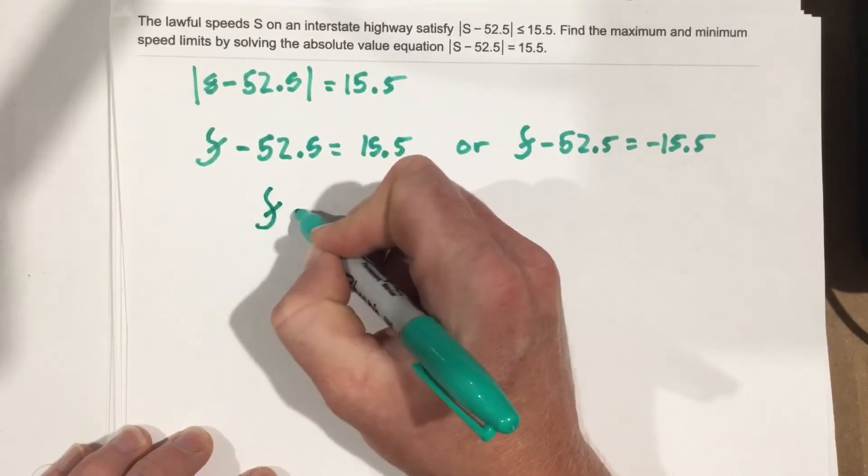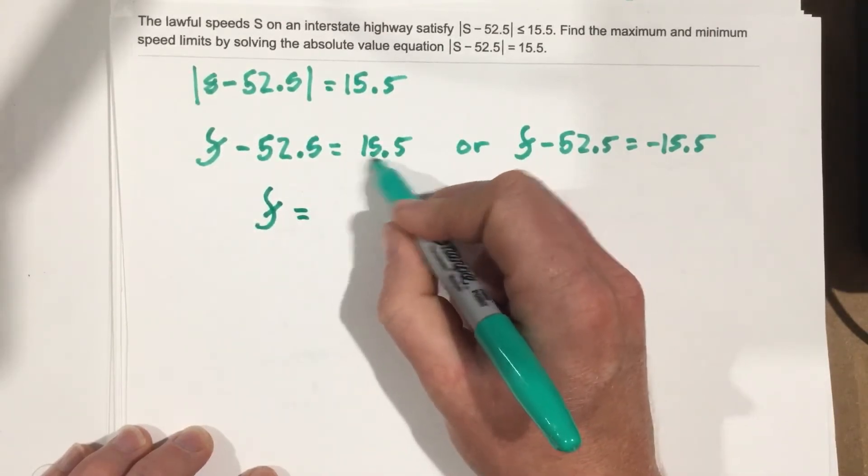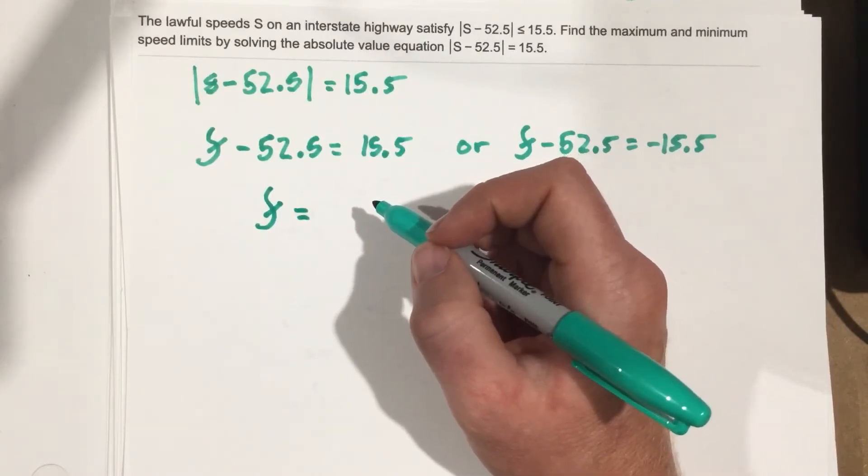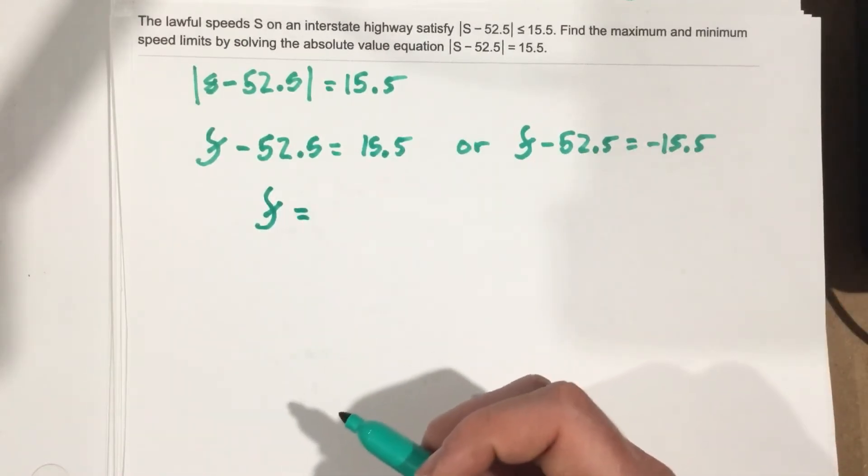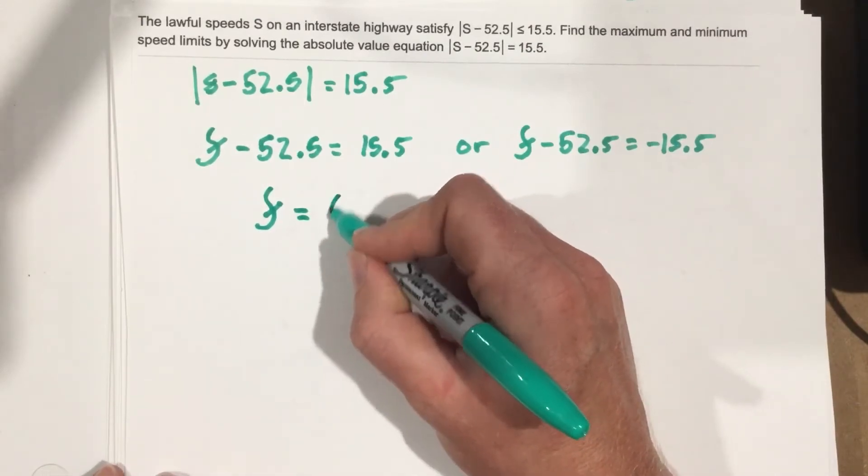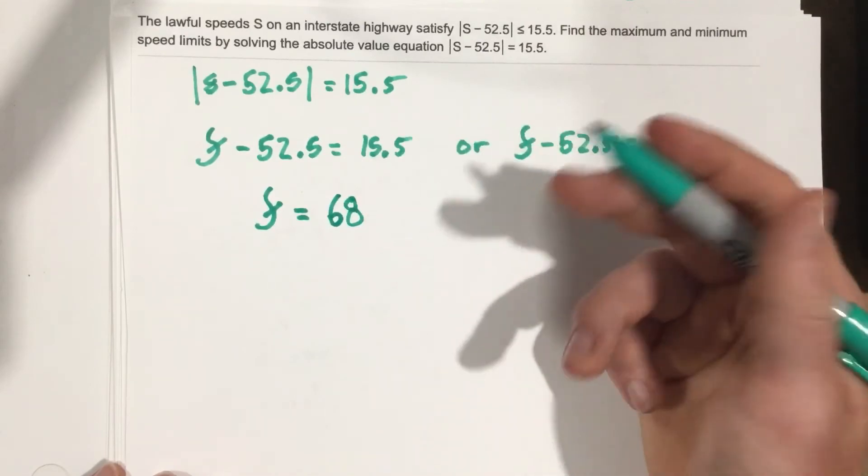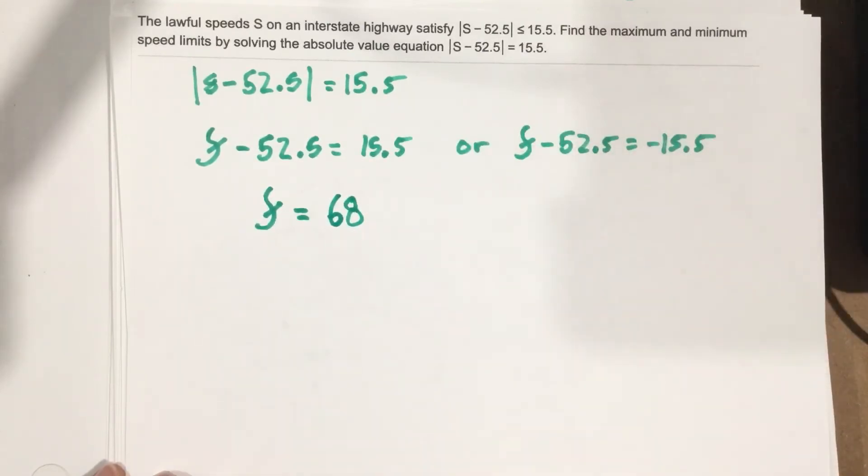we get s equals 15.5 plus 52.5. Let's see, that is 68. They're talking miles per hour, we'll just leave it as 68 because they don't really say.